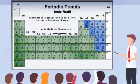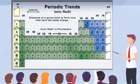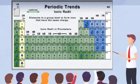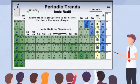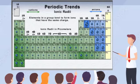Elements within a group tend to form ions that have the same charge, and the ionic radii tend to increase going down each group. For instance, ions in group 1A form cations with a single plus charge. Ions in group 2A form a 2 plus charge. On the other side of the periodic table, ions in group 6A typically form anions with a 2 minus charge, and those in group 7A tend to form a single minus charge. The noble gases in group 8A tend not to form ions due to their filled valence shells.